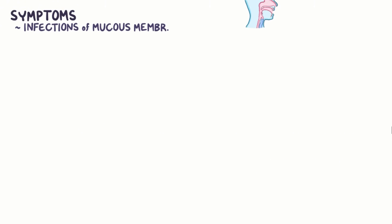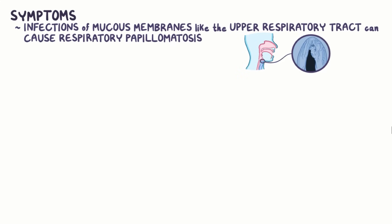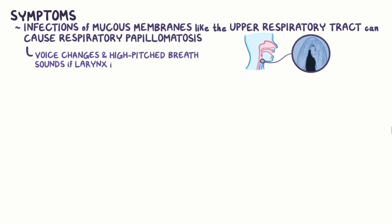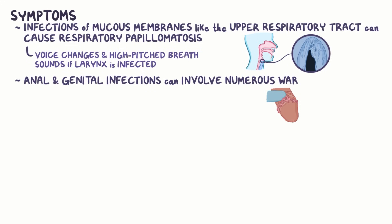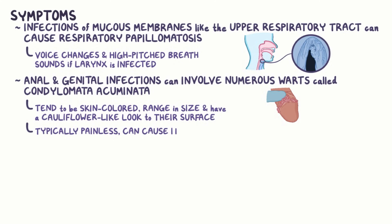Infections of mucous membranes, like the upper respiratory tract, can cause respiratory papillomatosis and can lead to voice changes and high-pitched breath sounds, particularly if the larynx is infected. Anal and genital infections, like in the vulva, cervix, vagina, penis, or scrotum, can involve numerous warts called condylomata acuminata. They tend to be skin-colored and can range in size, but have a cauliflower-like look to their surface. Though they're typically painless, they can cause itching, burning, local pain, or bleeding.